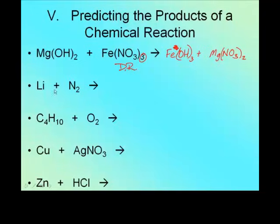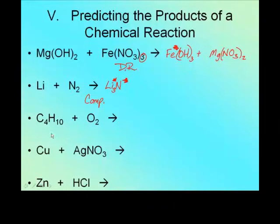Second one: lithium plus nitrogen — two single substances coming back together, so it's a composition reaction, which means I should get one compound. Li and N — people forget that nitrogen has a charge of minus three; lithium has a charge of plus one. The three comes down and becomes Li₃N.